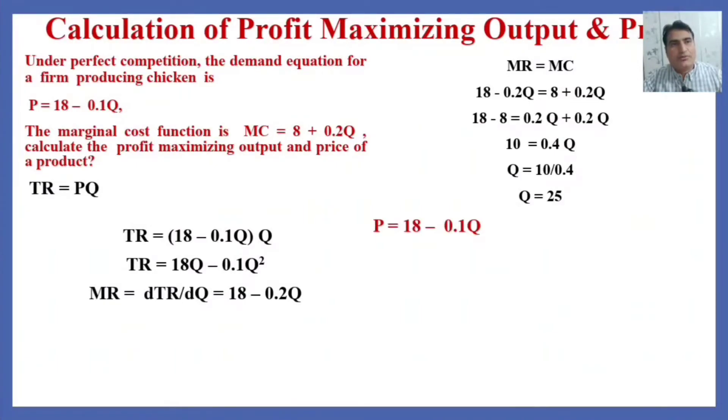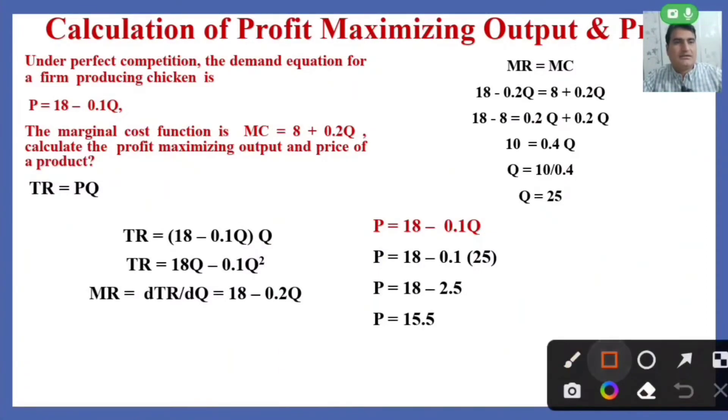What would be the price at this level of output? The price function is given. By putting the quantity in the price function, we shall find that the price is P = 15.5. This is the price, and it is the quantity where the firm can earn the maximum profit.